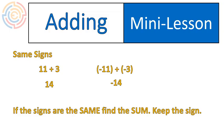Find the sum and keep the sign. Or in other words, add the numbers together and leave the sign the way it is. Positive plus a positive gives you a bigger positive. Negative plus a negative gives you an even larger negative. You add the numbers together, keep the sign.